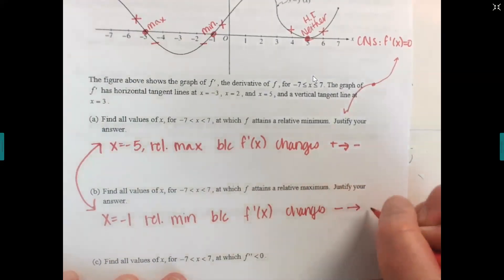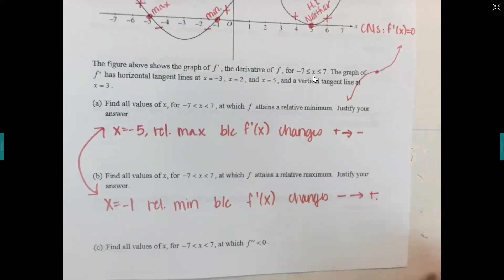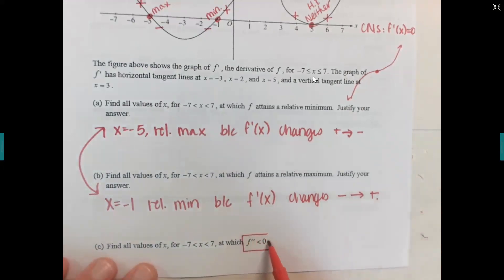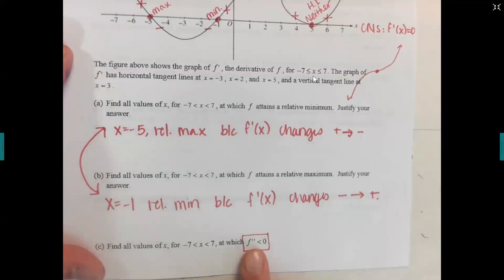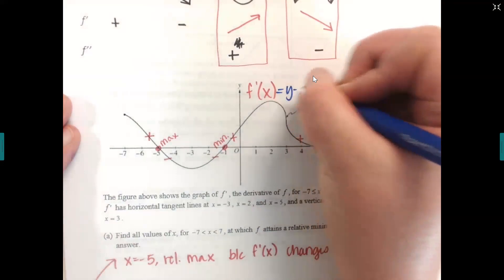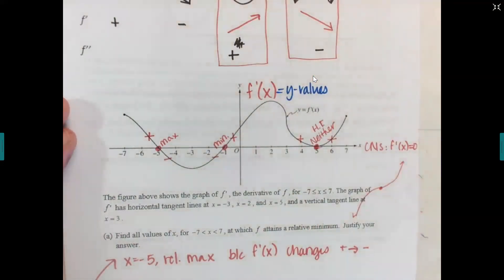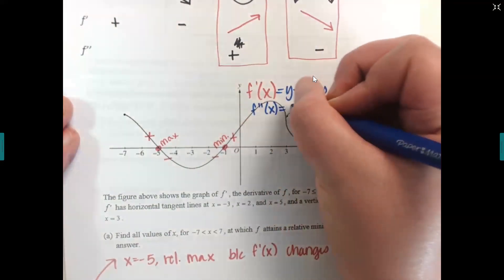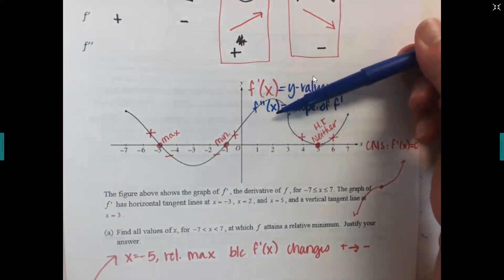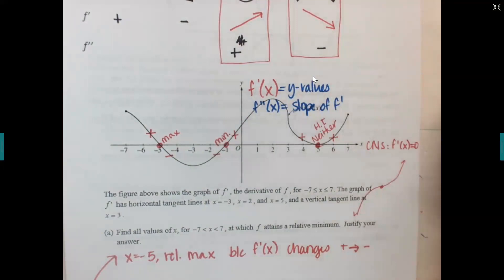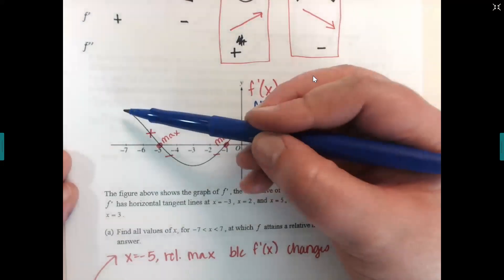Now find all values where the second derivative is less than zero. If the original graph is f prime, then f double prime is the slope of f prime. Since we want f double prime to be negative, we're looking for where f prime has negative slopes. Those are from negative seven to negative three, and then from two to five.